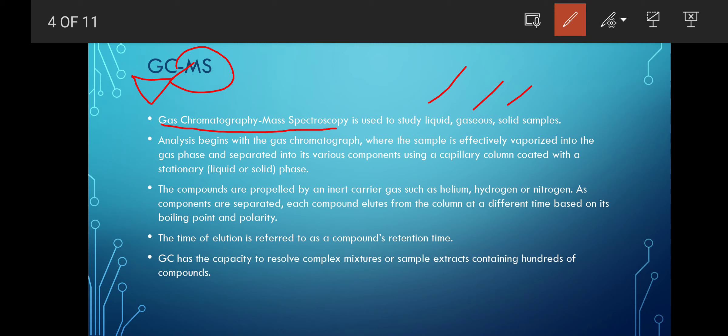The sample is vaporized into a gas phase and separated into various components using capillary columns. They are coated with stationary liquid phase. This is the gas chromatography method. The components are propelled by an inert carrier gas. Carrier gas is a gas which carries the particle. The carrier gases are helium, hydrogen, and nitrogen. As components are separated, each compound elutes.